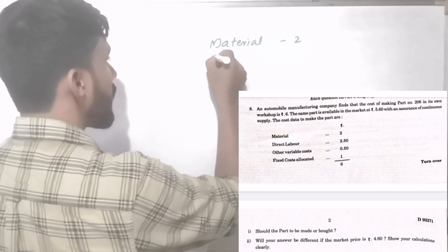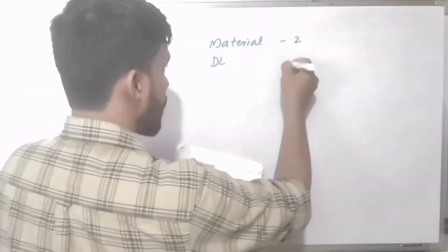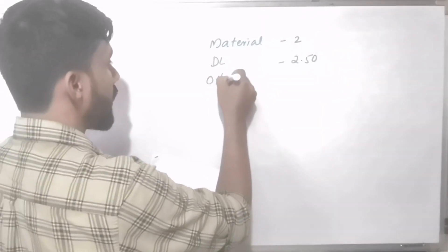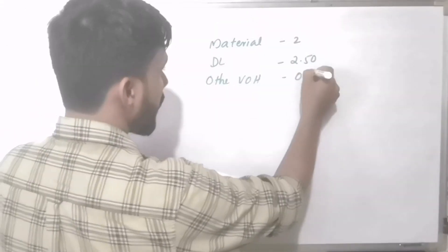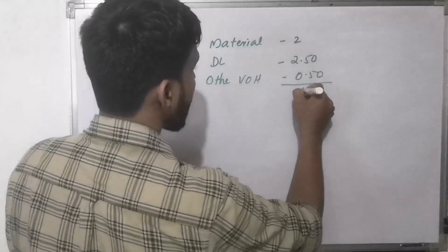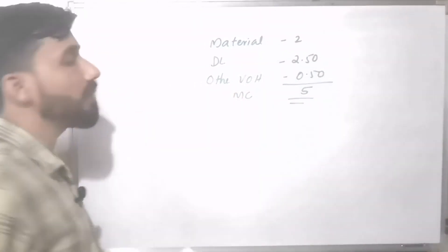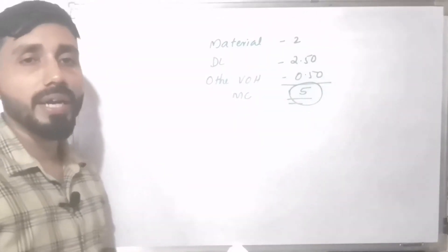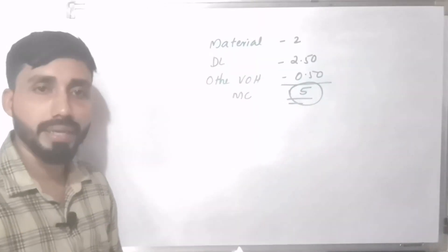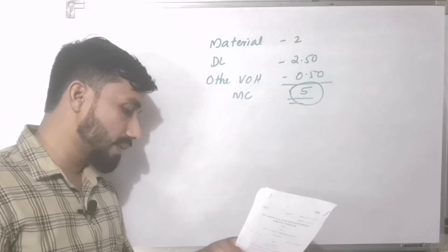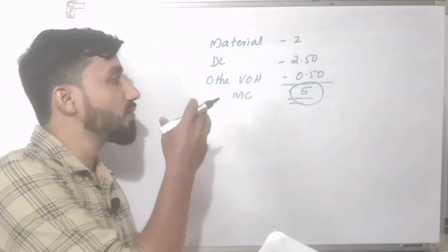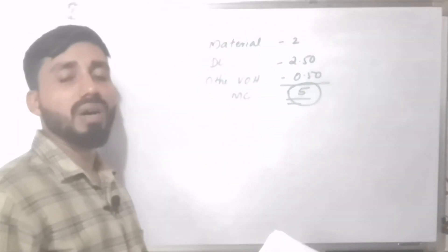Material Rs. 2, Direct Labour Rs. 2.50, Other Variable Overhead Rs. 0.50 — total marginal cost is Rs. 5. We compare this with the market price, which is Rs. 5.60.